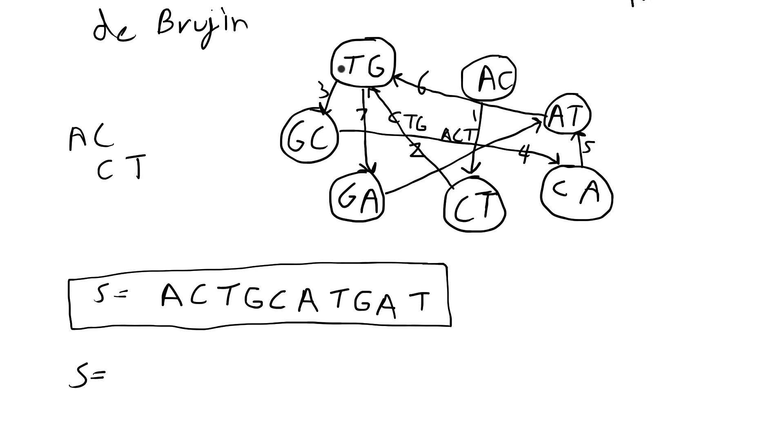which happens here when you go out of TG. In this example, I went from TG to GC, but I could have also equally gone from TG to GA. And that would have been a second Eulerian path through the graph.